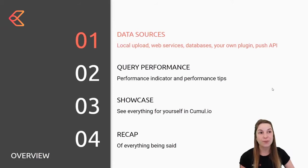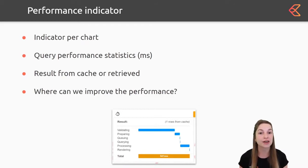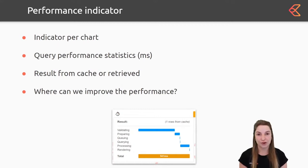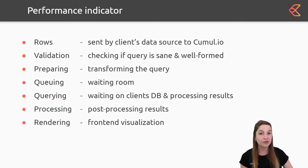That was the first part about possible data sources. Now let's go to query performance. If you've created a dashboard and want it to load very quickly, you can go to the dashboard editor and in the chart you can see a performance indicator with some statistics on how the query performs. You can also see if the result is coming from cache or not, and it helps you identify where you can make improvements to make your query run faster.